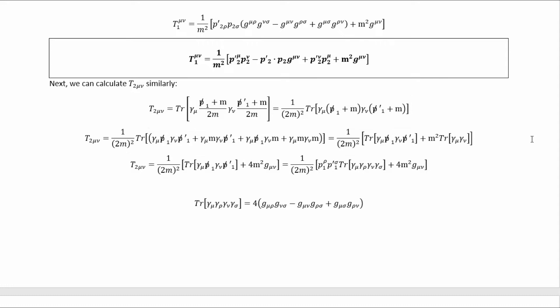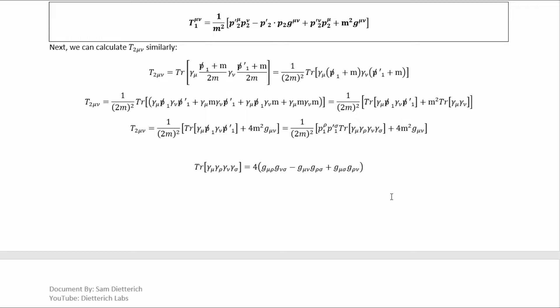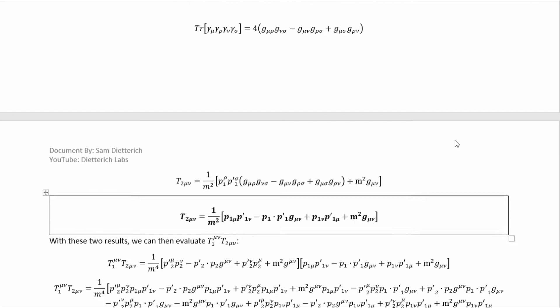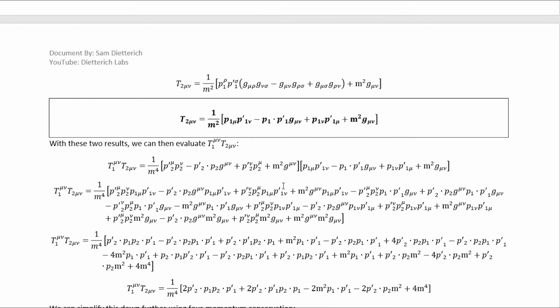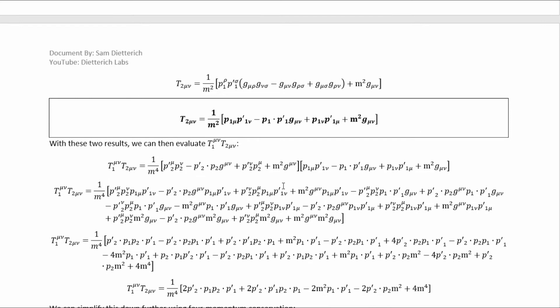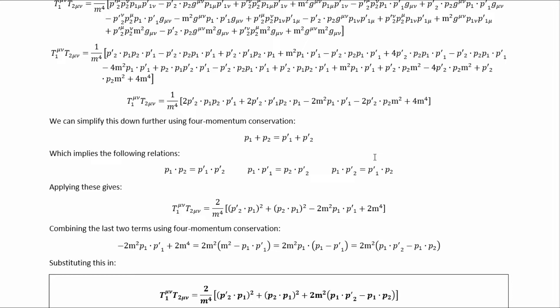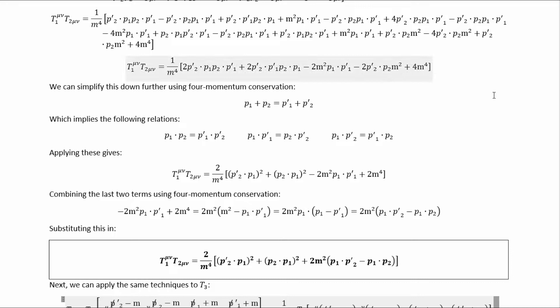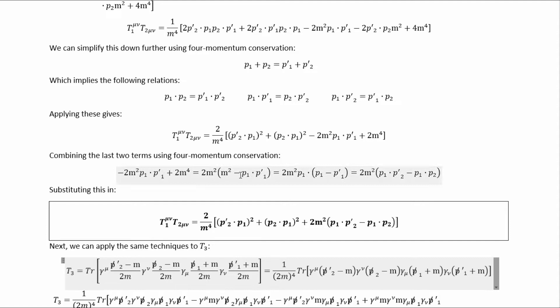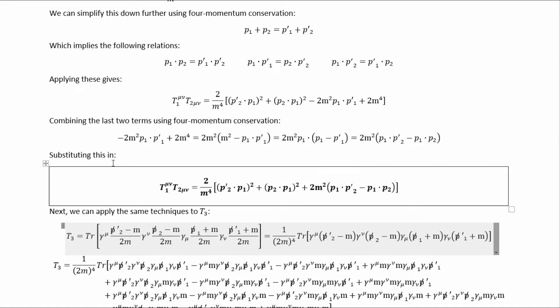Now we can handle T2. The process is the same: pull out the denominators, multiply it out, ignore terms with products of odd numbers of gamma matrices because they trace to zero, and then use standard gamma matrix identities to evaluate the remaining traces, ultimately giving us the result for T2. Then we know that the numerator of the first term involves the contraction of T1 and T2, and since we've calculated both, we can contract them. Multiplying that out and writing it in dot product notation, we arrive at the contracted T1·T2.